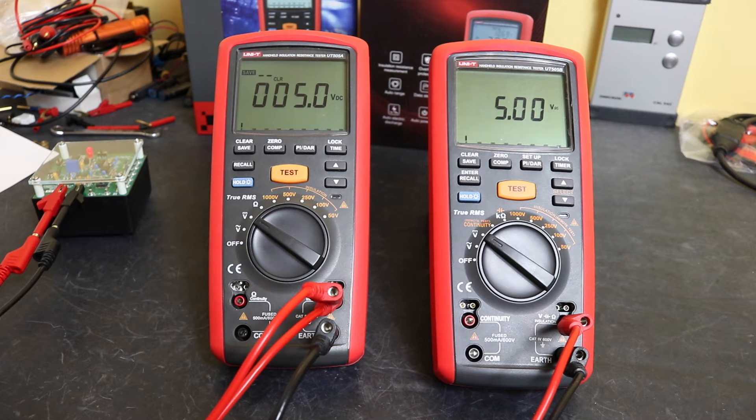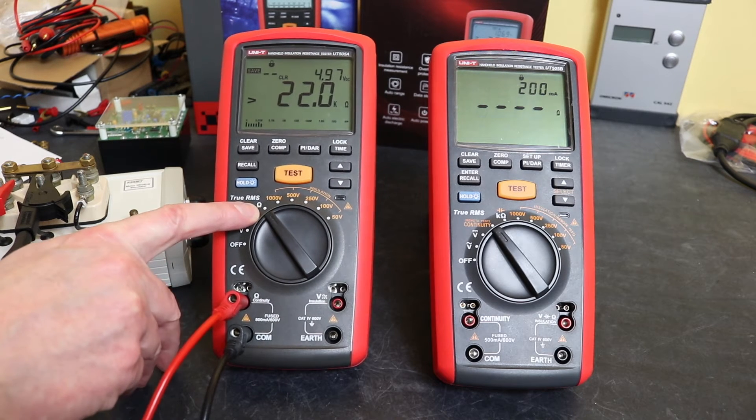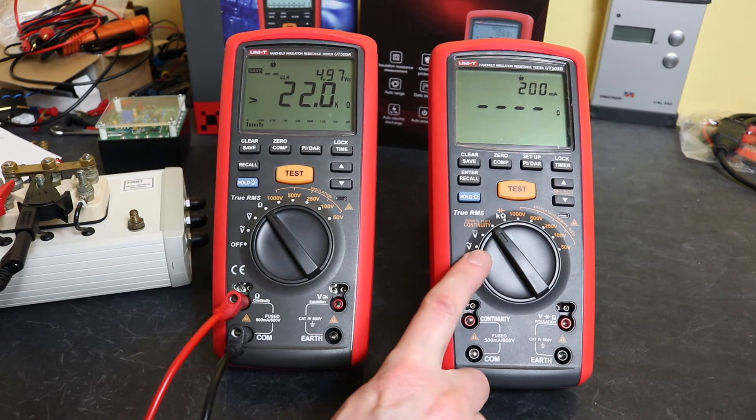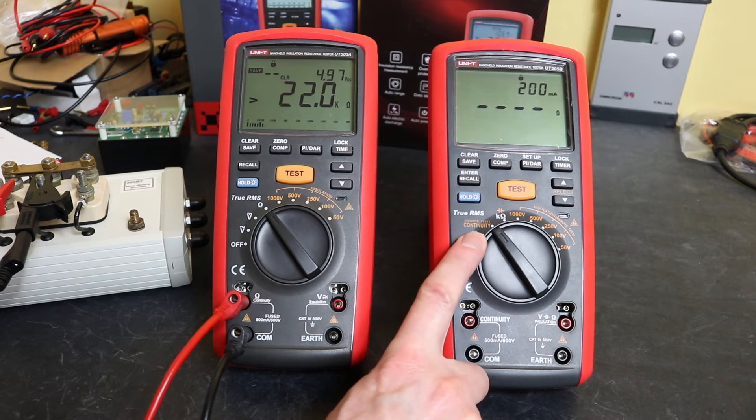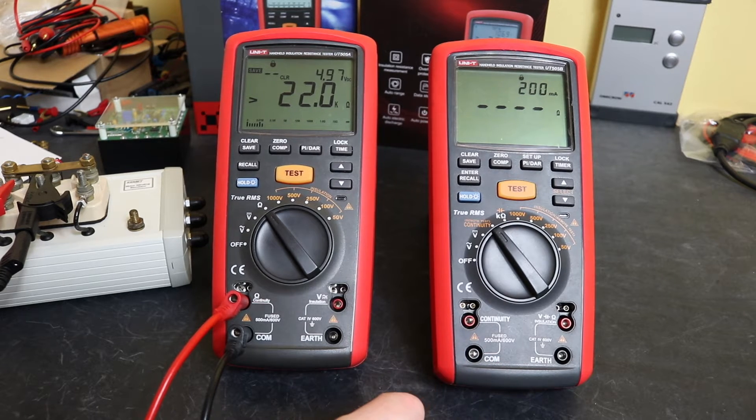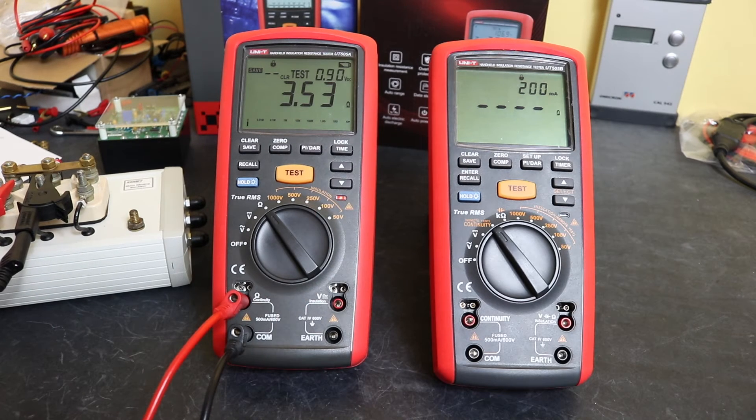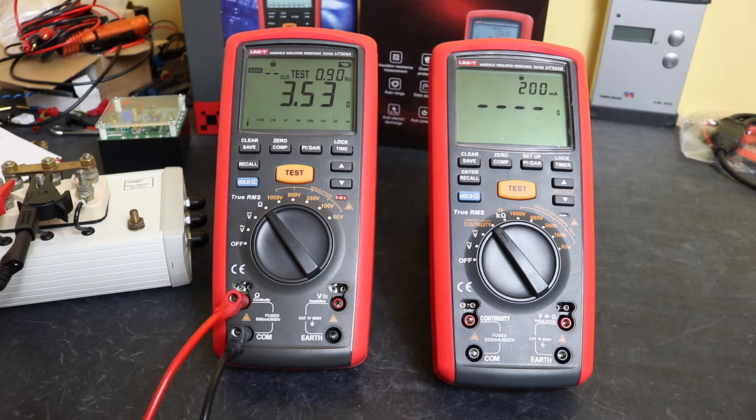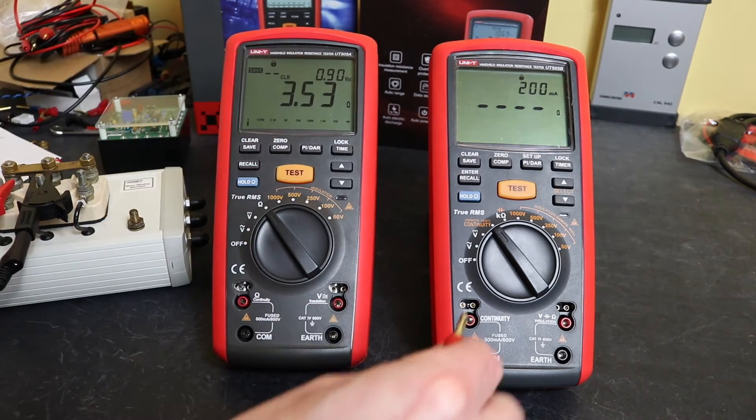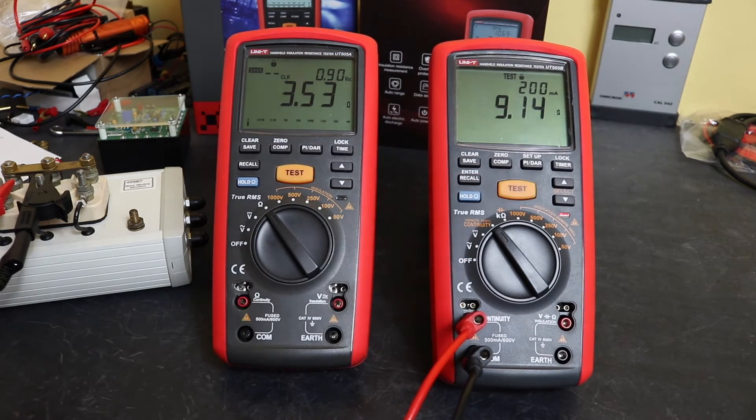Moving along onto the next function, this is actually continuity and ohms combined on the UT505A up to 20 kilo ohms, whereas on the UT505B it's purely a continuity function that goes up to 100 ohms. The resistance is on the next setting along. You can see this instrument here, we are on star mode and we should be 3.5 ohms. We've got 3.53 ohms on this instrument, all well and good, no issues whatsoever.